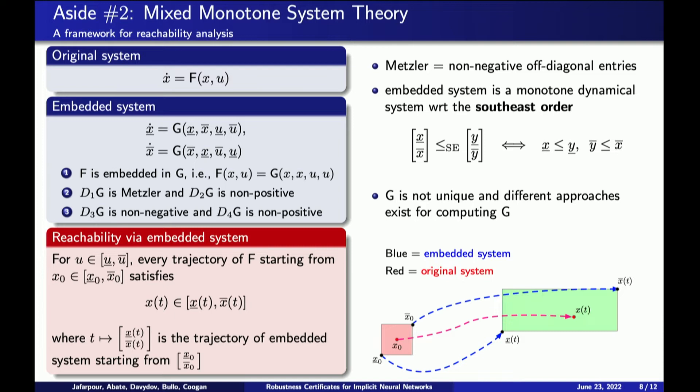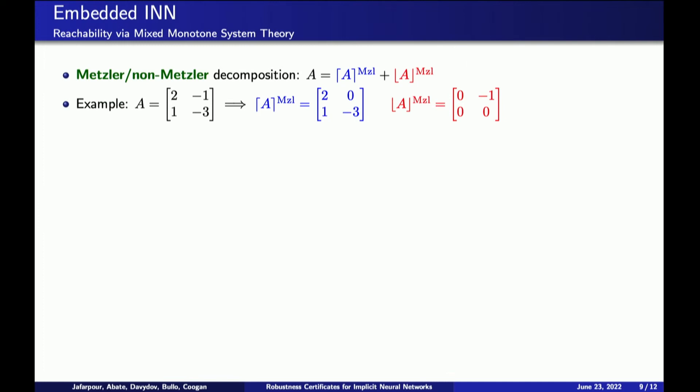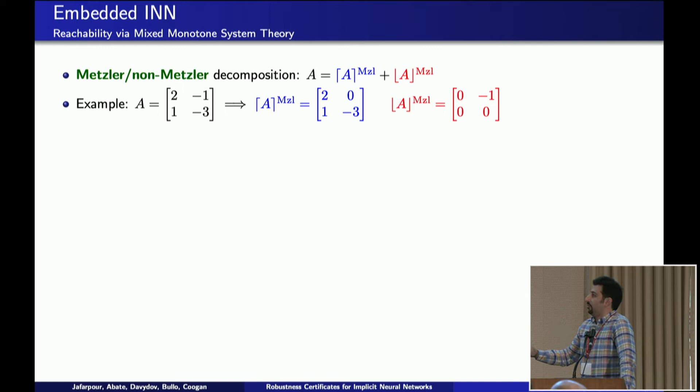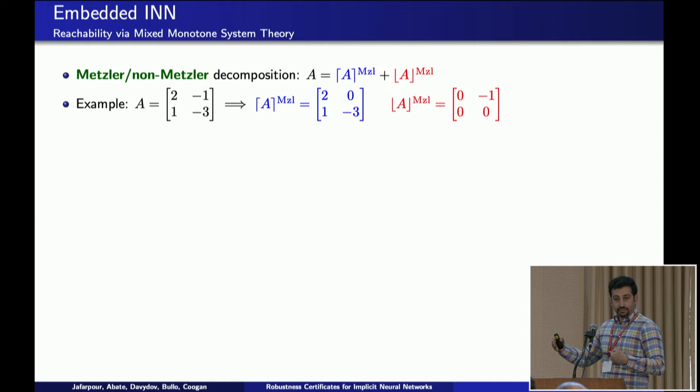With that, I close the parenthesis on the tools and go back to the INN for robustness analysis. One key element we introduce is the notion of embedded INN. Every matrix can be decomposed into a Metzler part and non-Metzler part. A Metzler matrix is a matrix whose off-diagonal elements are non-negative. Using this decomposition, we define the embedded INN: we consider the dynamical system associated with our INN on R^N, and show that using mixed-monotone system theory, we can find a nice closed form for the embedded system. The embedded system has this Metzler part and non-Metzler part of the weights.